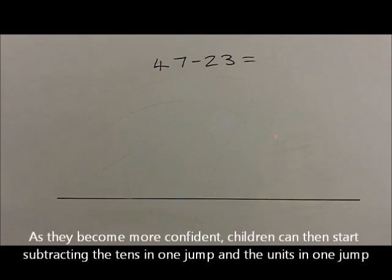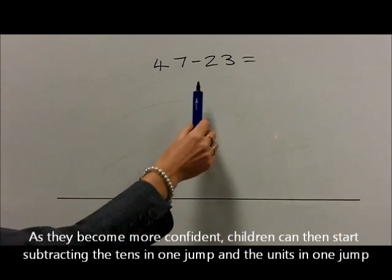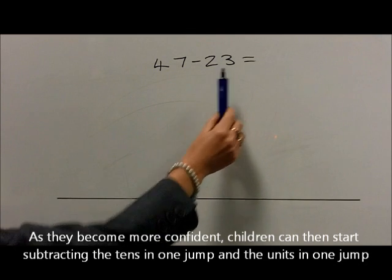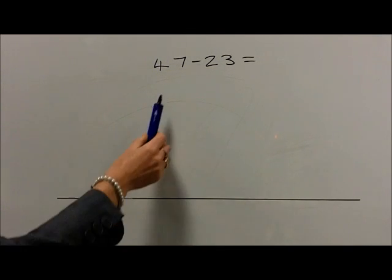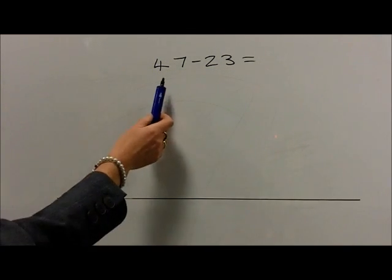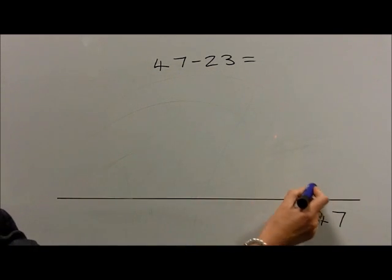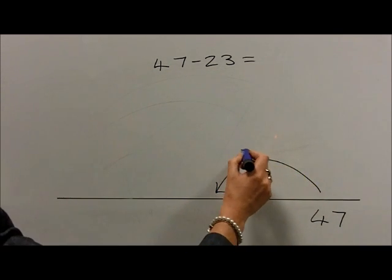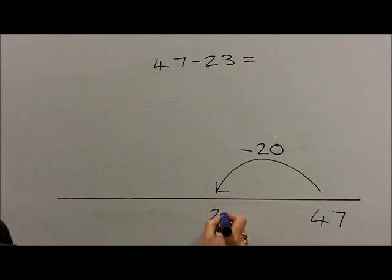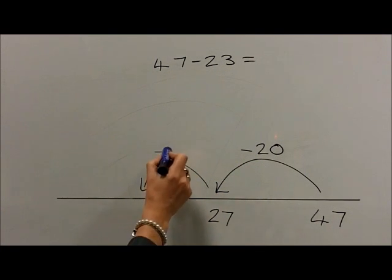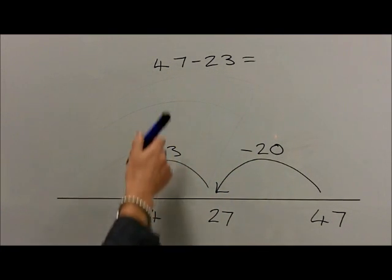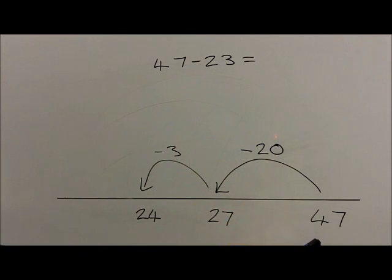As they become even more confident, children can then start subtracting the tens in one jump and the units in one jump. So for the question 47 take 23, they start at the number 47 on the right-hand side of the number line. They then first subtract 20 to reach 27 and then subtract 3 to reach 24. So 47 take 23 gets them to 24.